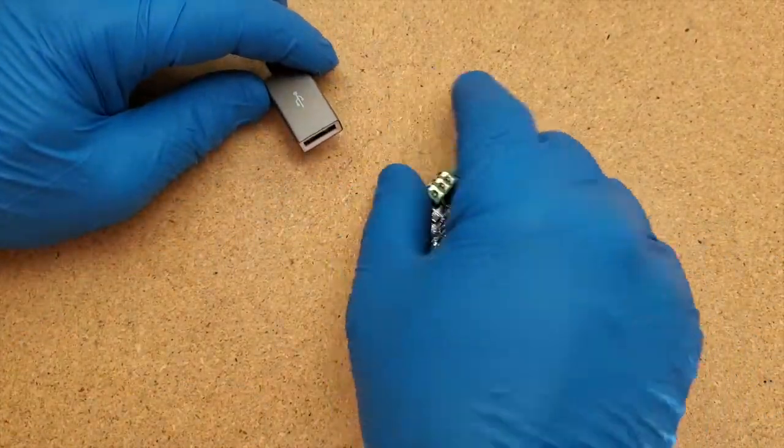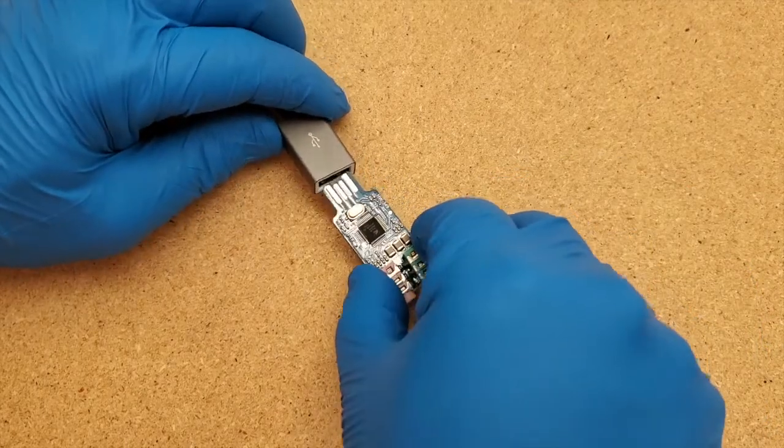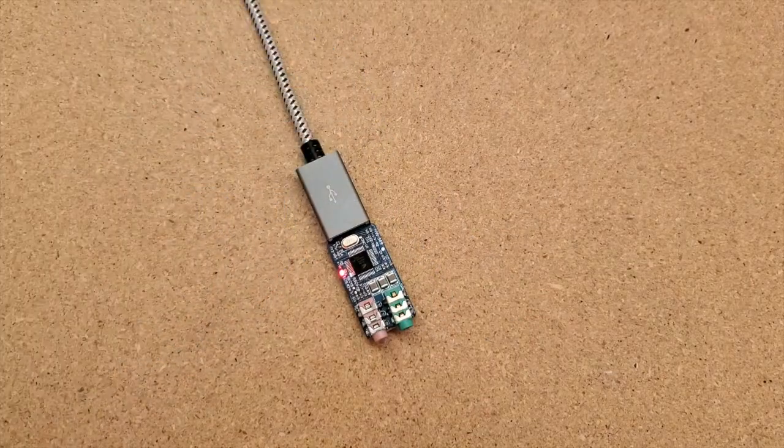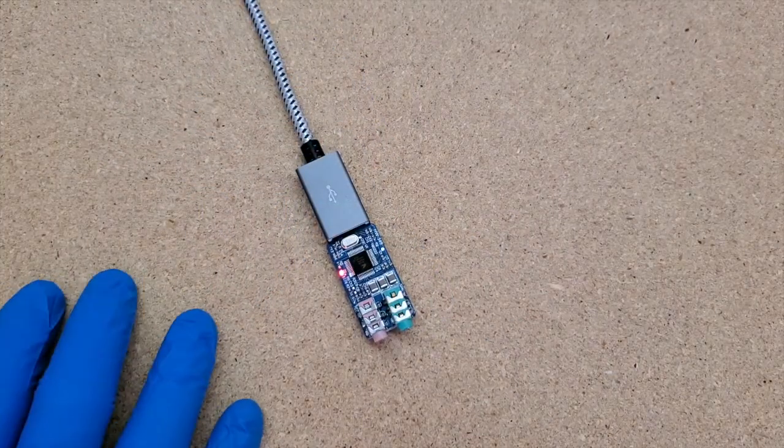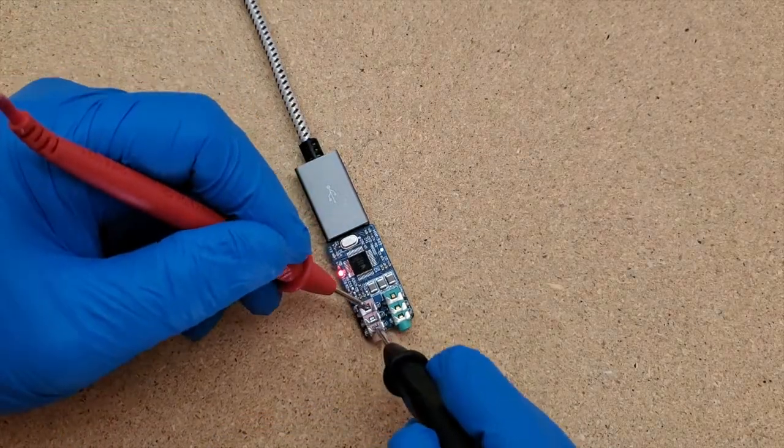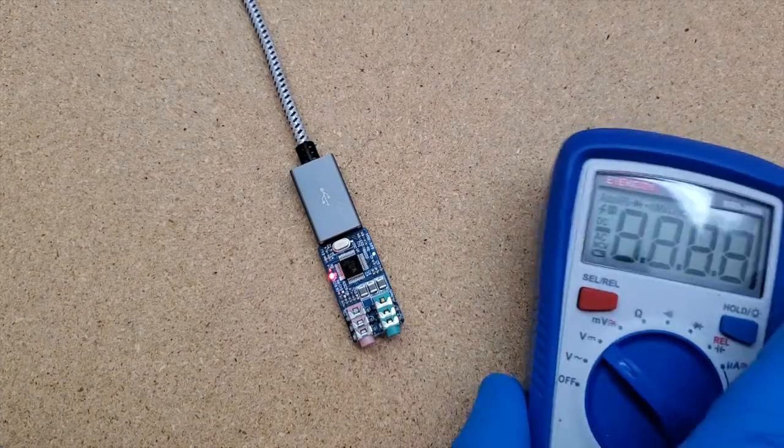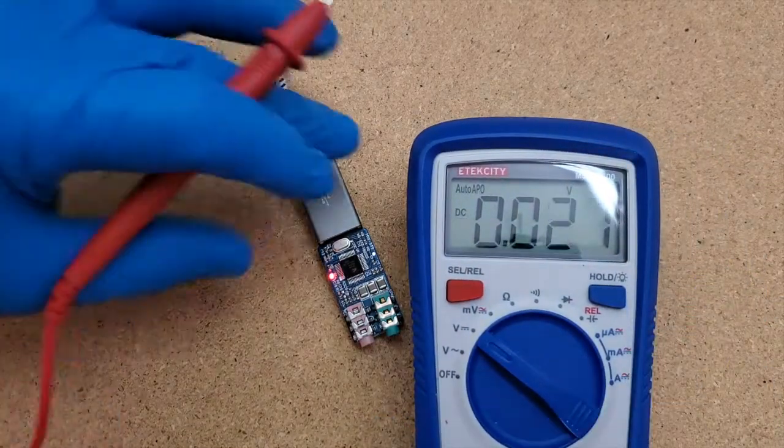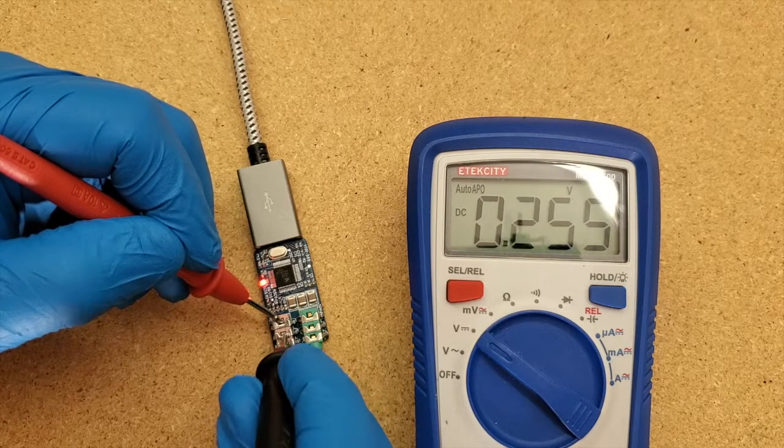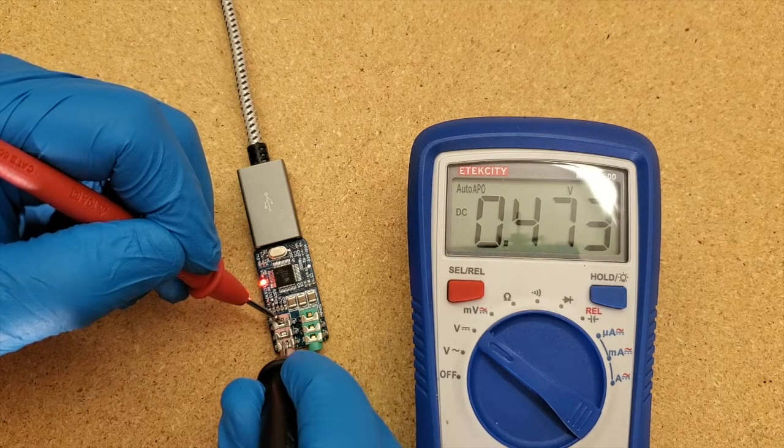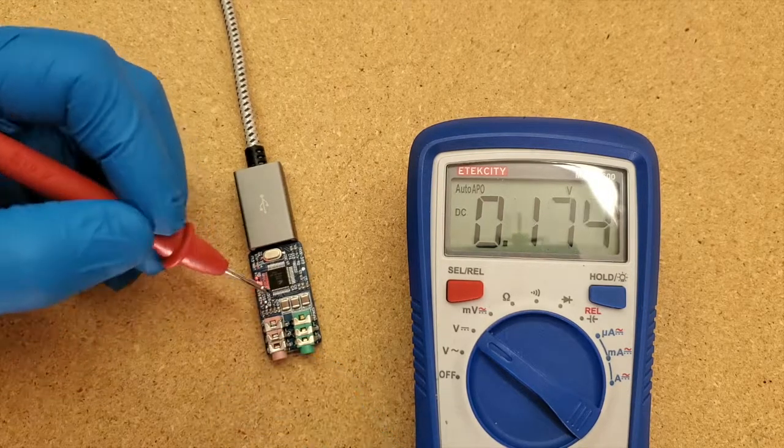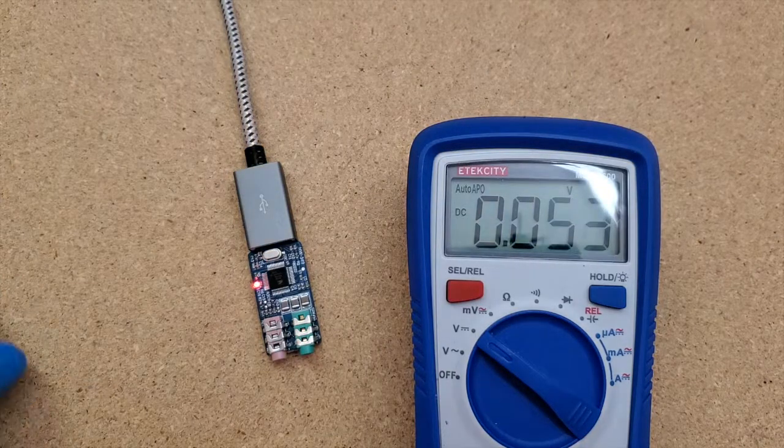Now it is removed. We'll plug it back in. The light comes on, which is a good sign. Let's put the meter on it. And now we don't have any voltage going across any of them. Hopefully that helped out. Thanks for watching. Stay tuned for another one.